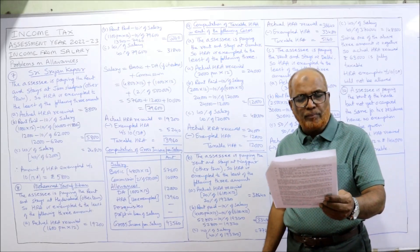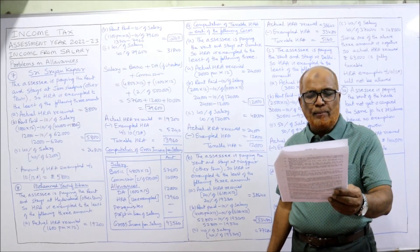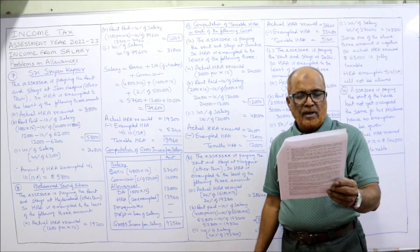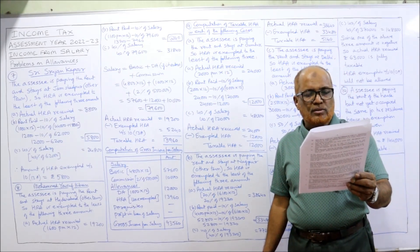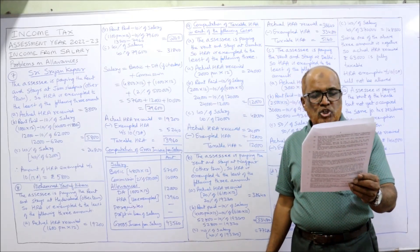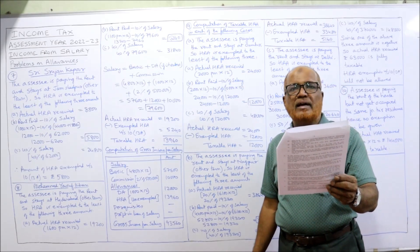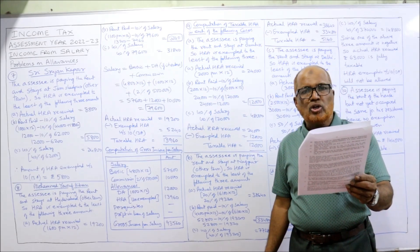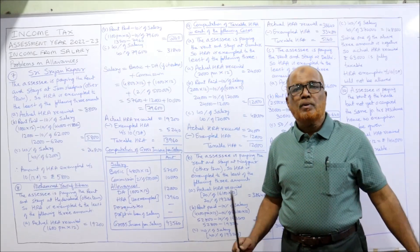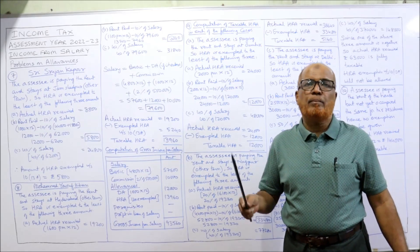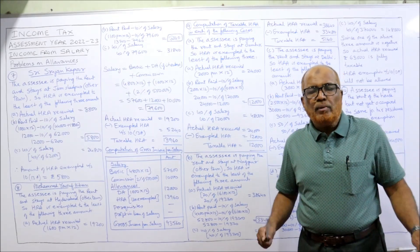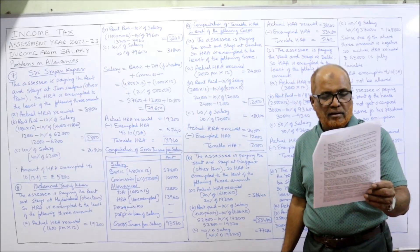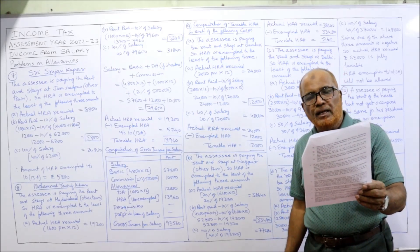Now Problem 8. Mr. Muhammad Yusuf Khan is an employee of a public sector unit in Hyderabad. He draws a monthly salary of Rs 4,800, house rent allowance Rs 1,600, and dearness allowance Rs 1,000. He is entitled to 2% commission on sales; the sales target achieved is Rs 5,00,000. Rent paid is Rs 1,100 per month. DA and commission enter for retirement benefit. So here salary means basic pay plus DA plus commission.